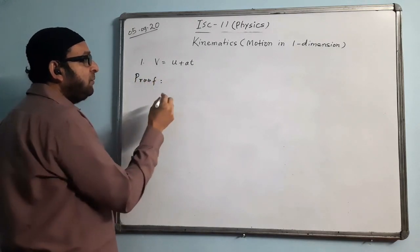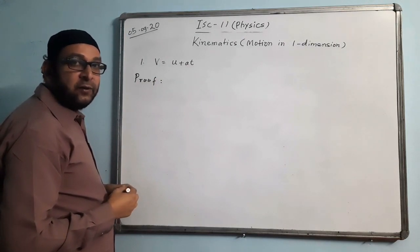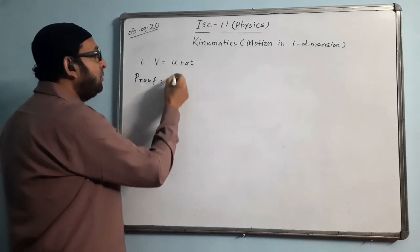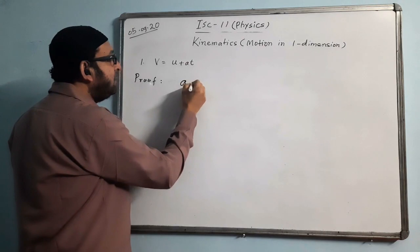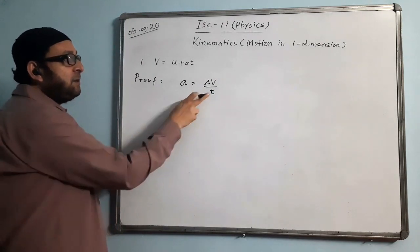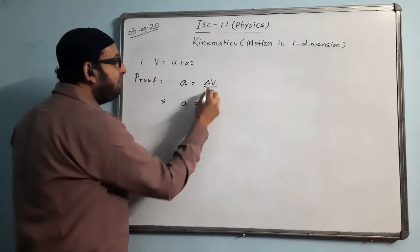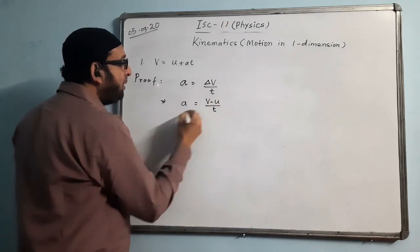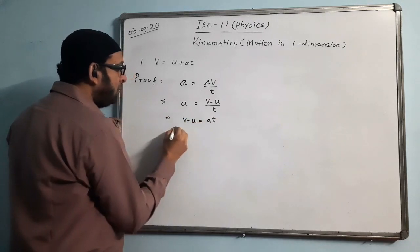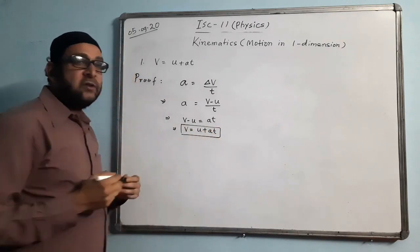To prove v = u + at, we write the definition of acceleration: acceleration is the rate of change of velocity, SI unit is m/s². So we write a = change in velocity / time, which gives a = (v − u) / t. Cross-multiplying gives at = v − u, therefore v = u + at. This formula is proved by the definition method.